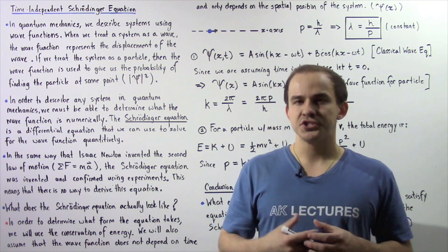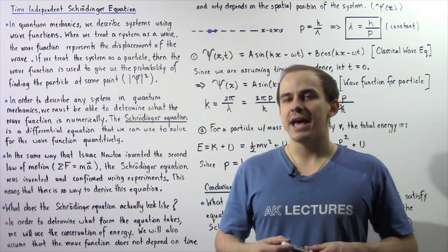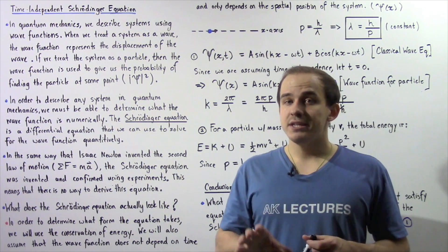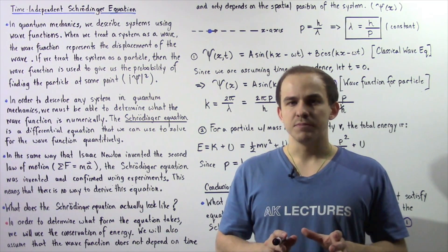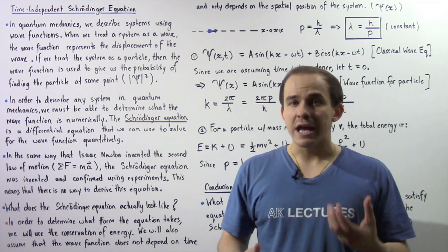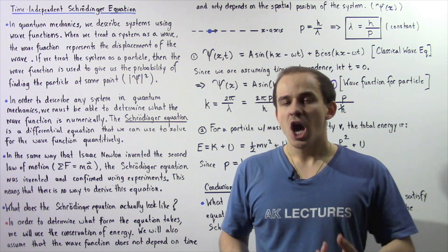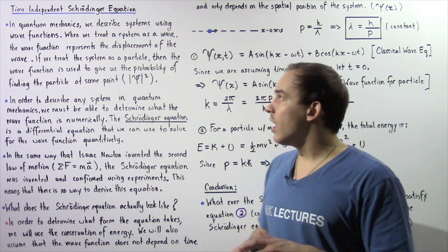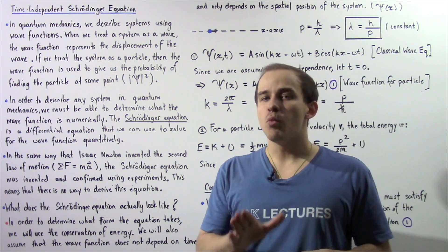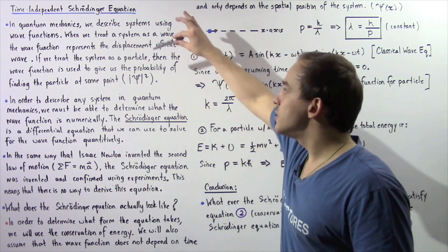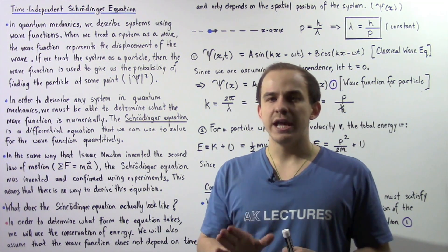Quantum mechanics basically incorporates the wave-particle duality of matter — a system can act as a wave or as a particle. In quantum mechanics, we describe any system such as an electron using a quantity known as the wave function. When we treat our system as a wave, the wave function represents the displacement or amplitude of the wave. On the other hand, if we treat our electron as a particle, the wave function allows us to calculate the probability of finding that particle at some moment in time and some location in space.